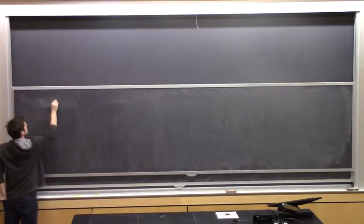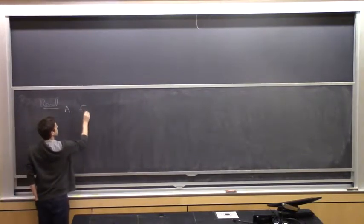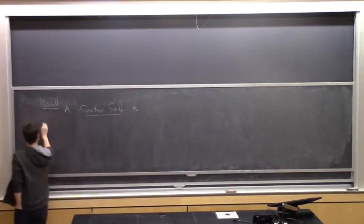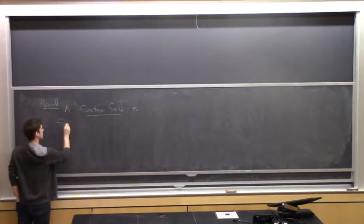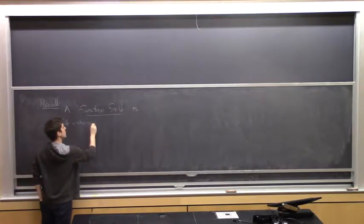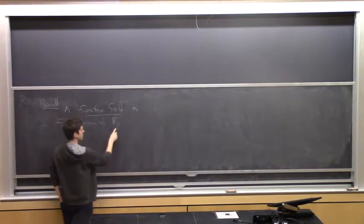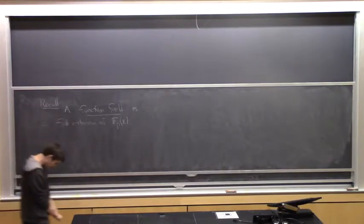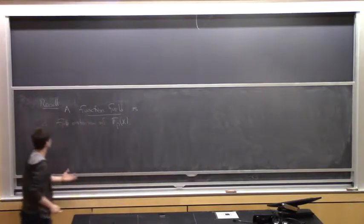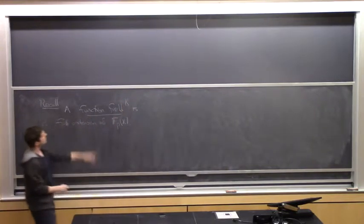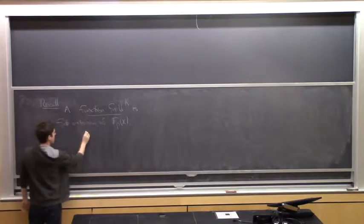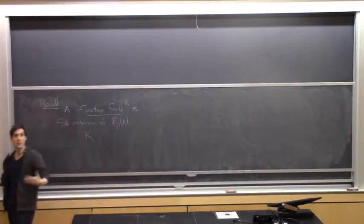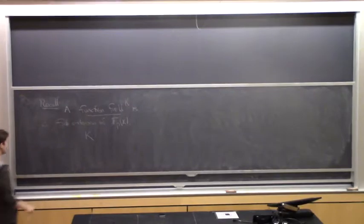Recall that a function field is a field which appears as a finite extension of something where you take a field with p elements, add some element x, and it's going to be a finite extension thereof. In this lecture we're going to focus our attention on a function field k. By definition every function field contains a finite field. If it's a finite extension of F_p[x], then it contains F_p, but typically it contains a bigger finite field.